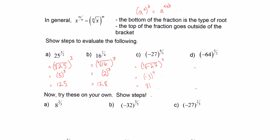For negative 64 to the 5 over 2, we write the square root of negative 64 all raised to the 5. Now — is it possible to take the square root of a negative number? No, it's not. Since we can't calculate the number inside, there is no solution — DNE, does not exist.